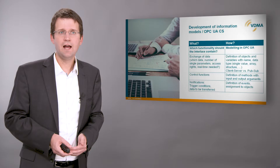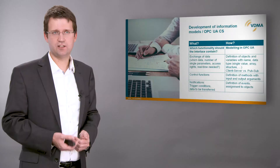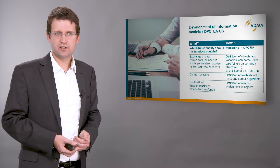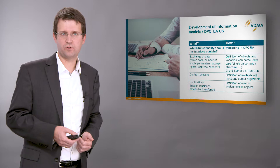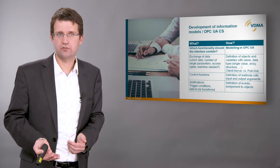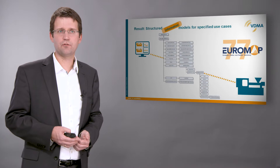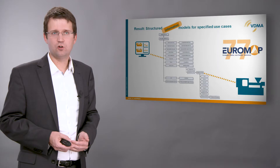How does the work in the working groups look? We have two aspects: the what and the how. Independent from the used communication technology, the functionality of an interface must be defined. This includes relevant properties of the described devices, process parameters, remote control functions, and also notifications. When this is fixed, the modeling in OPC UA starts. There, object types, data types, methods, and events are created. The result of the work is a structured model for the specific use case. By providing a semantic description, this is not only a data model, but an information model.